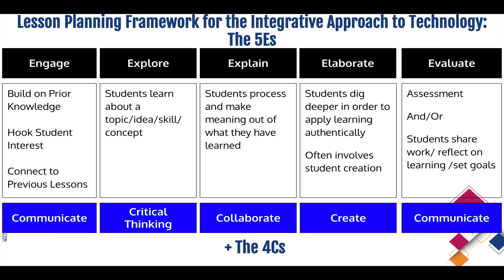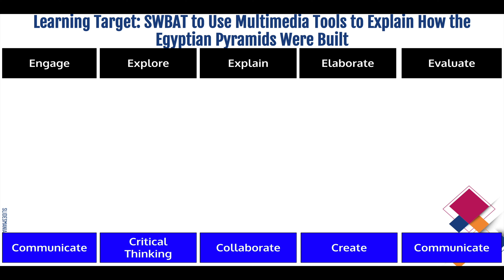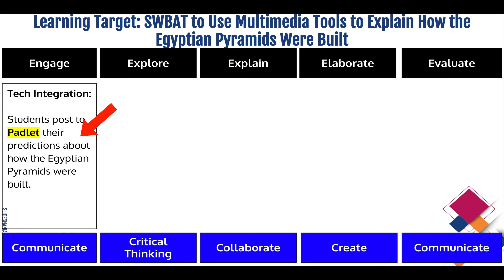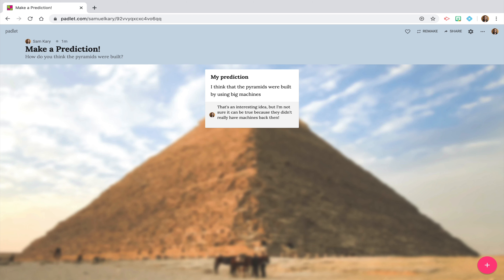Notice that so far I haven't talked about specific technology tools yet. We're going to get there now, looking at how to apply that formula to a learning target. Let's take the example: students will be able to use different multimedia tools to explain how the Egyptian pyramids were built. In the engage phase, where I want to build students' communication skills, I could use a tool like Padlet, where students post concise predictions about how they think the pyramids might have been built. We could also build in digital literacy skills when talking about appropriate ways to comment on each other's posts.